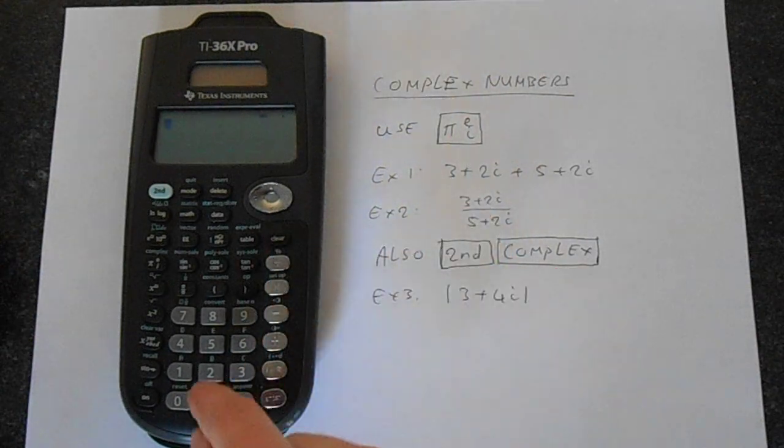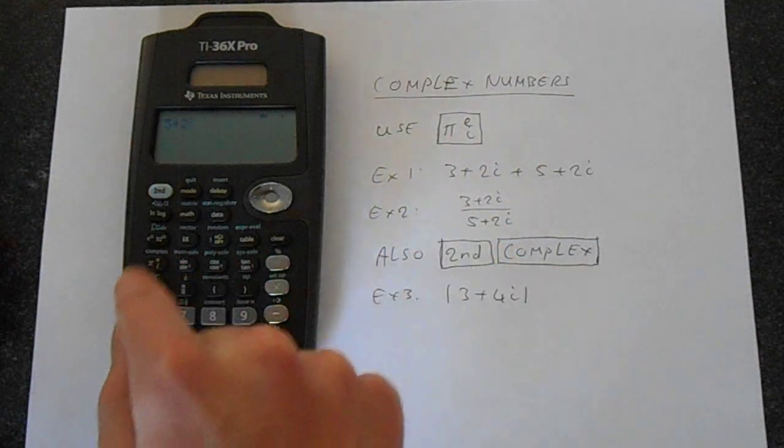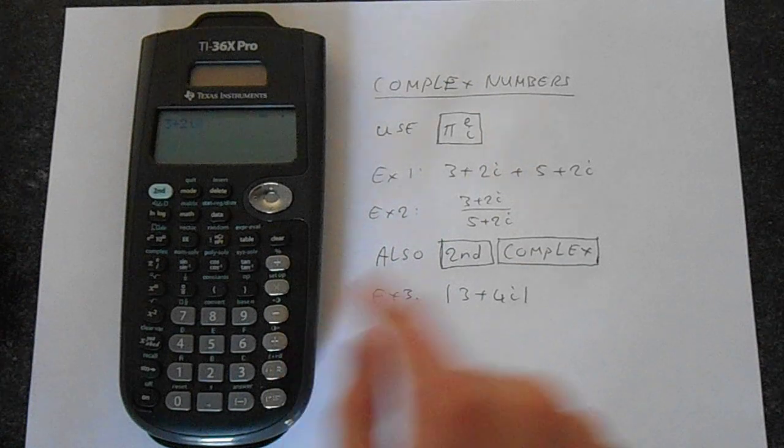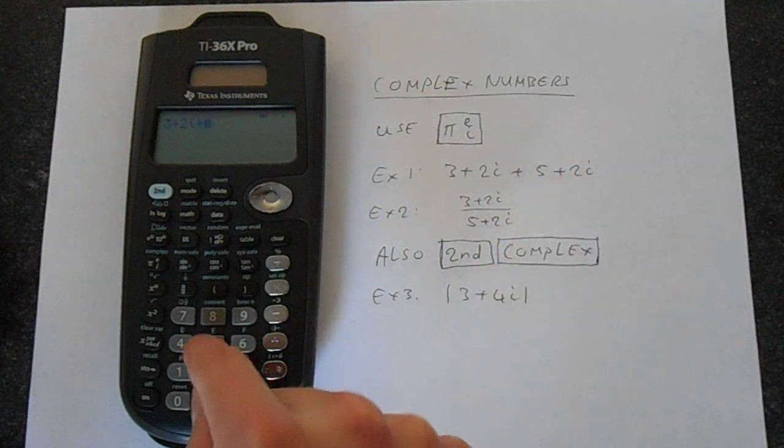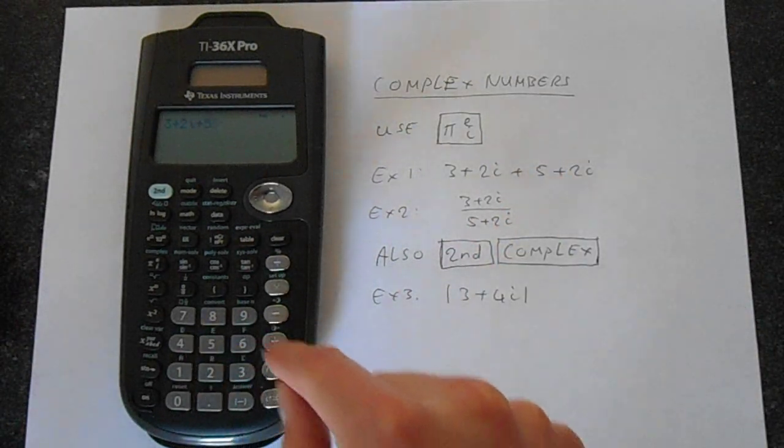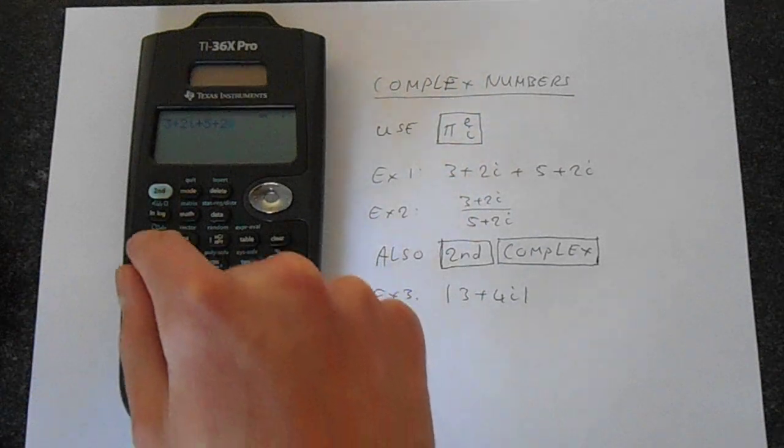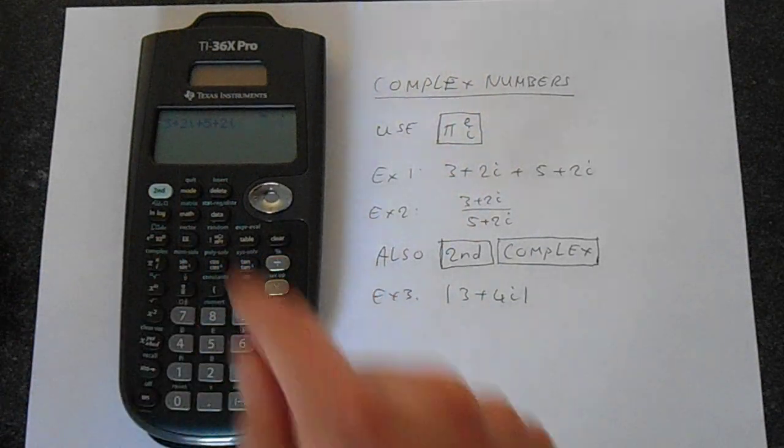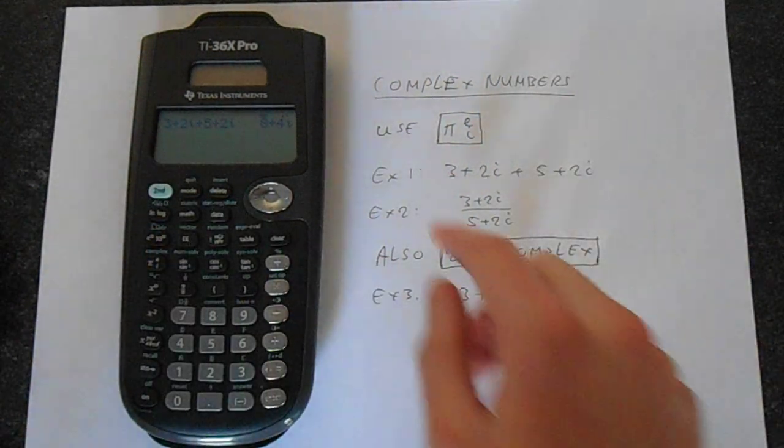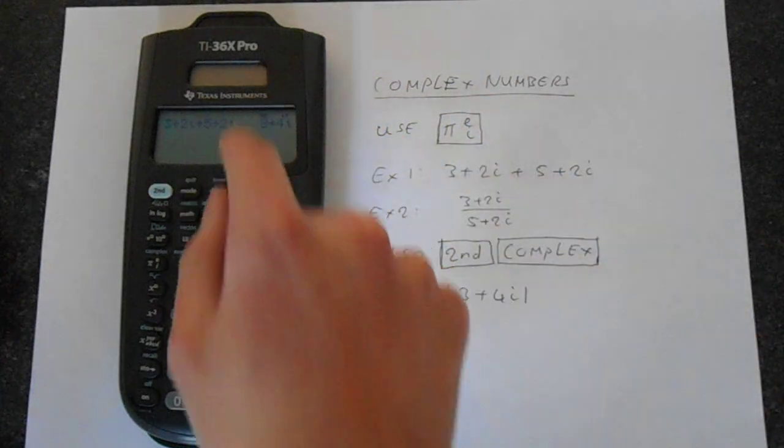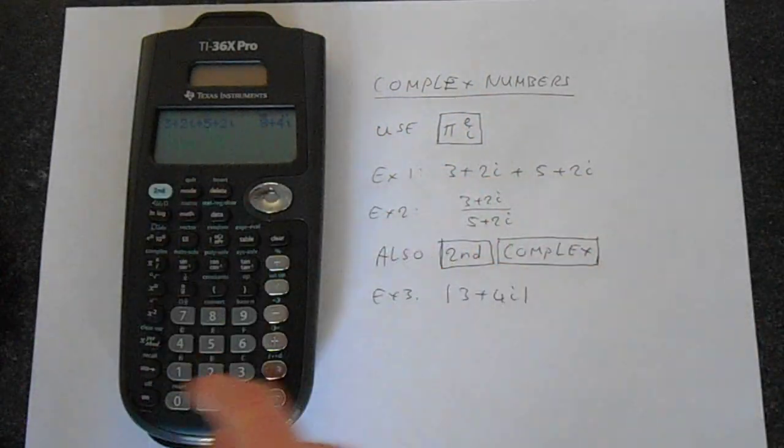So we can do things like, let's say, 3 plus 2i, and then we can add 5 plus 2i to it. And that will add a complex number. That is, of course, 3 plus 5 is 8, and 2 plus 2 is 4.